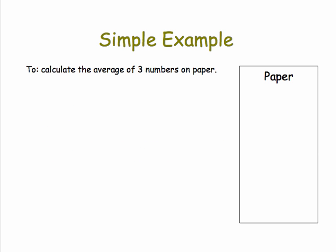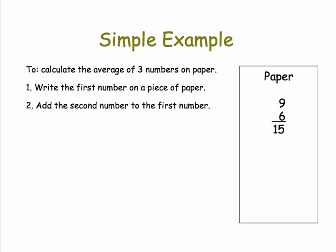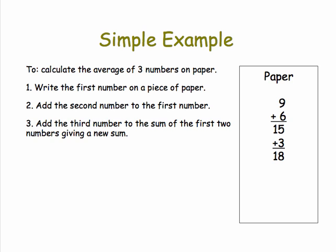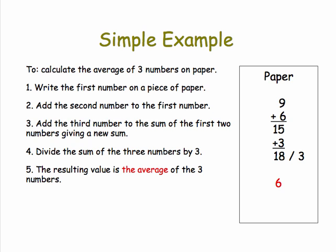So, let's take a simple example, an algorithm for averaging three numbers. Step one is to write the first number on a piece of paper. Step two is to add the second number to the first number. Step three is add the third number to the sum of the first two numbers, giving a new sum. So, our new sum is 18. Step four is divide the sum of the numbers by three, giving us six. And step five is stop, that the resulting value is the average of the three numbers. So, as you can see, each step is very precise. Each step is very doable by means of a simple arithmetic operation.